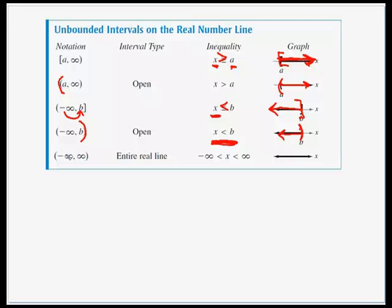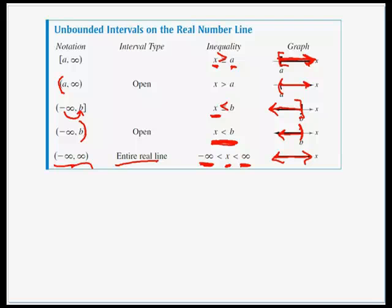If our interval has no endpoints at either left or right — if we're going from negative infinity all the way to infinity — then our interval is the entire real number line. The inequality would have X between negative infinity and positive infinity, or we'd just have our arrow going in both directions.